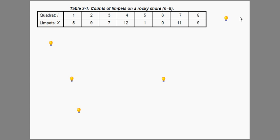In this short video I'm going to look at the summation notation used in the SBI 209 statistical manual. And I'm going to start using the example from Table 2.1 in Section 2, which has counts of limpets on a rocky shore.